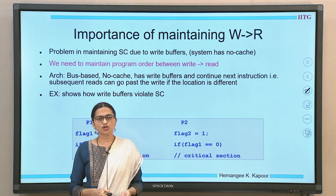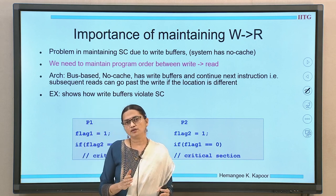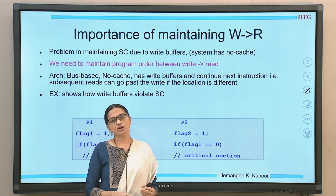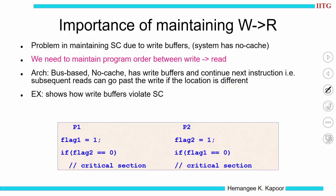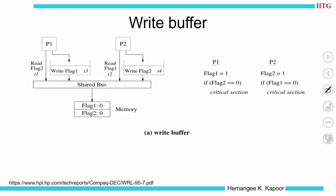When we want to maintain sequential consistency and need to maintain the write-followed-by-read order, this might not always be easy. Consider a multiprocessor system that does not have a cache — it is a bus-based system but has write buffers. Without a cache, reads and writes would all go to main memory through a shared bus.